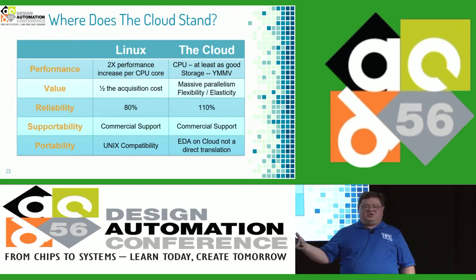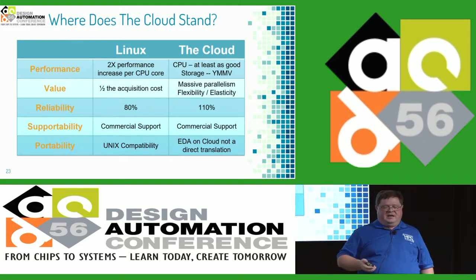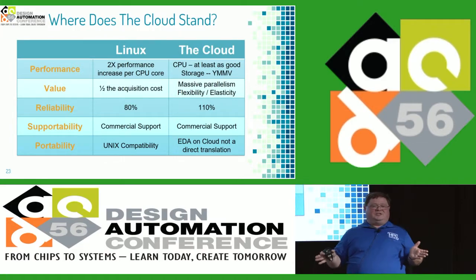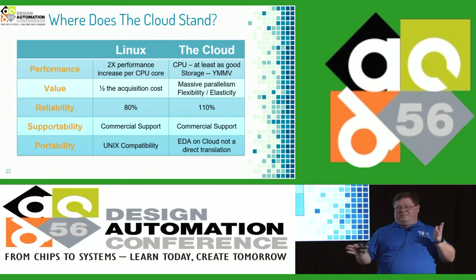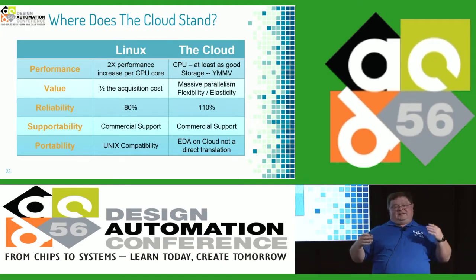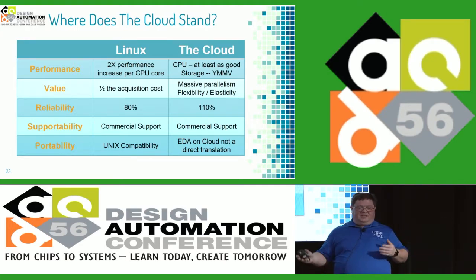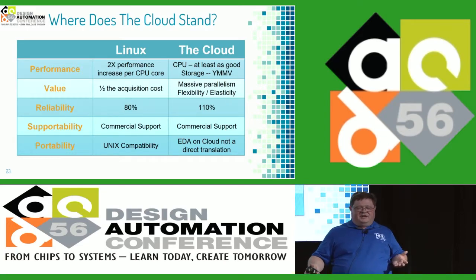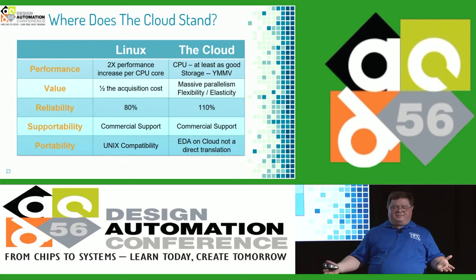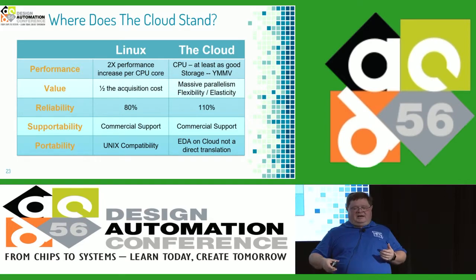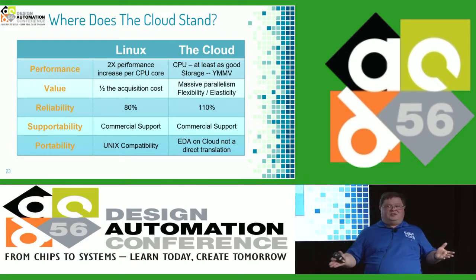Hearkening back to my Linux comparison: on performance, Linux was a 2x improvement per CPU core. The cloud? On the CPU front, you're at least as good as what you've got on-prem — no question about that. Storage? Your mileage may vary, depending on vendor selection, whether you use native or third-party, how you configure it, and your use model. On the value side, Linux was half the acquisition cost. On the cloud side, it's not really a cost play to be honest — the cloud gives you massive parallelism and the ability to make your infrastructure code, spinning things up and down with elasticity in a way you can't do on-prem.